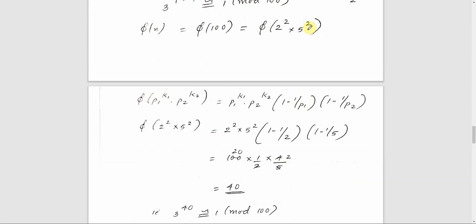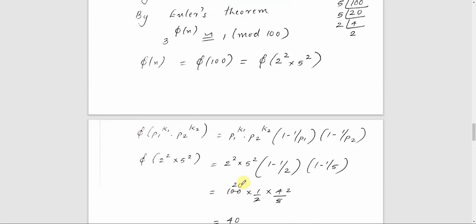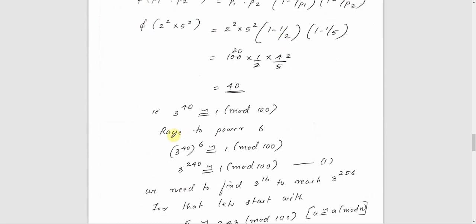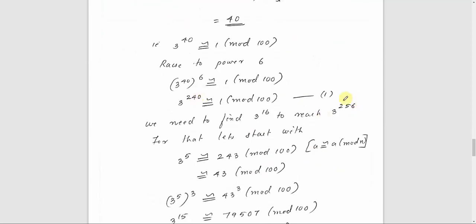So 3 raised to 40 is congruent to 1 mod 100. Since 256 equals 240 plus 16, and 240 equals 40 times 6, we have 3 raised to 240 is congruent to 1 mod 100. Then 3 raised to 256 equals 3 raised to 240 times 3 raised to 16, which is congruent to 1 times 3 raised to 16 mod 100.